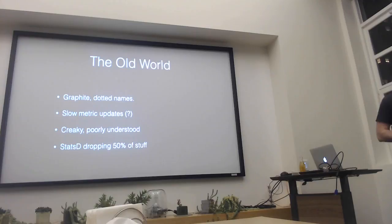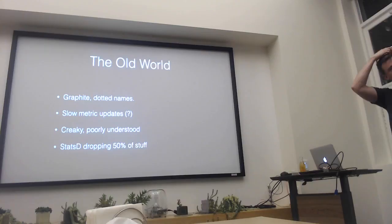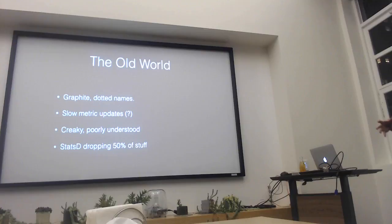So the old world. This is basically what things were like about a year and a half ago at Stripe. We used Graphite, and Graphite, as you're probably all familiar, uses dotted names. We had some problems, though — and not all these problems were because Graphite's bad.